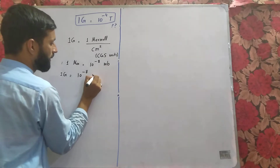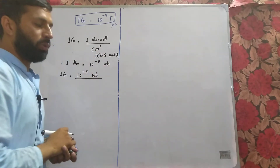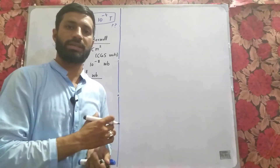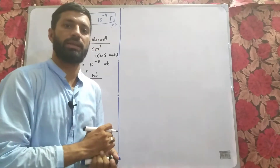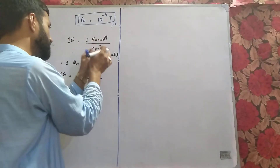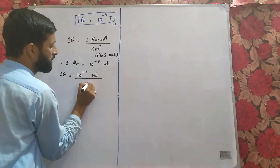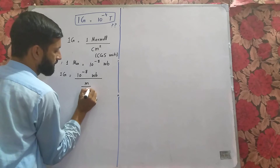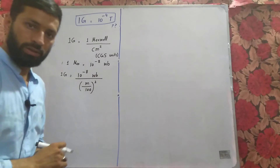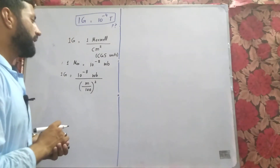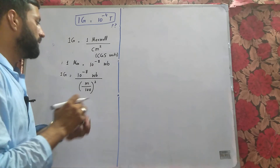Since we are calculating in SI units, centimeter will be converted into meter, so centimeter becomes meter divided by 100, and this is squared. Now, one Weber is equal to Newton meter per ampere.